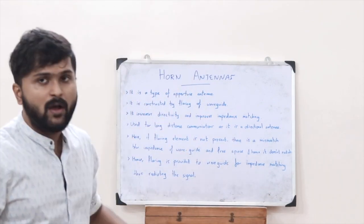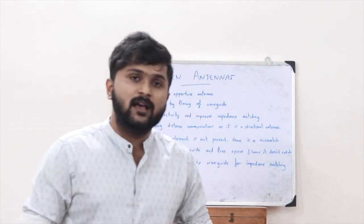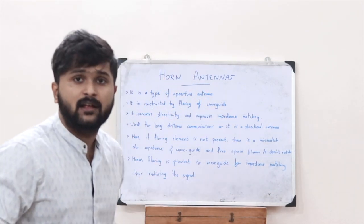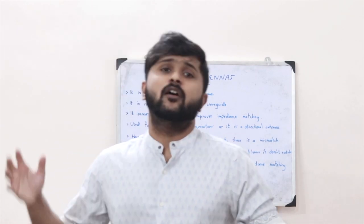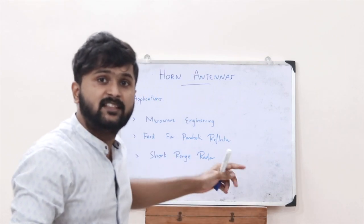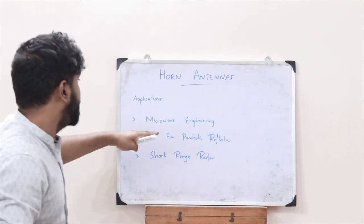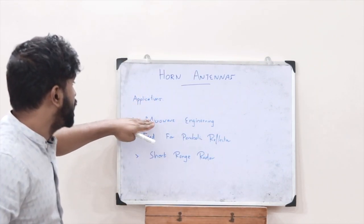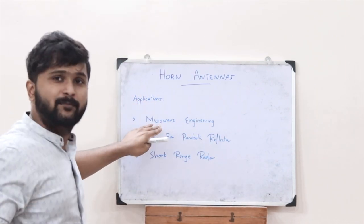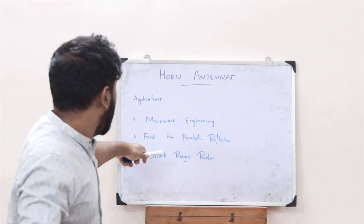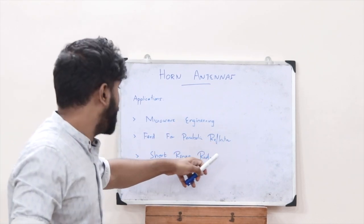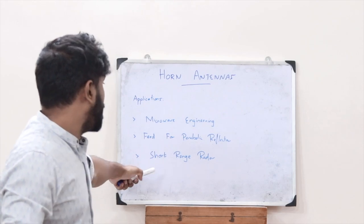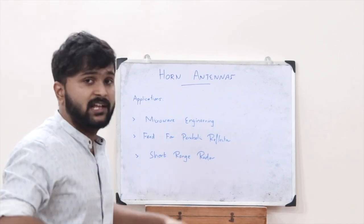That basically sums up what a horn antenna is. Now let us see the applications of horn antennas. There are three main applications: it is used a lot in microwave engineering, it is used as a feed for parabolic reflectors, and it is also used in short range radars.